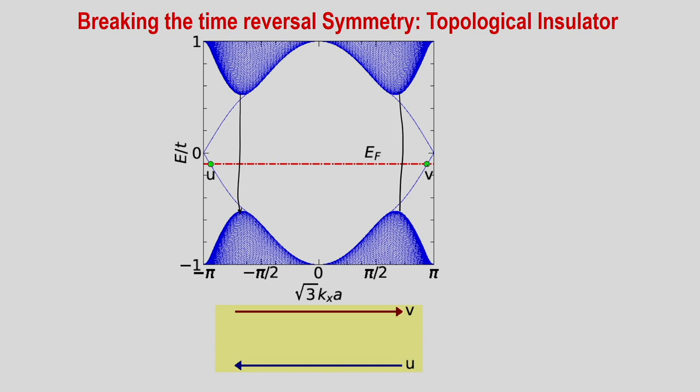The edge mode cuts at two green points. At those points the velocities are in opposite directions: electrons at the u-point travel from right to left (blue curve), and at the v-point from left to right — they are moving in opposite directions, just like a highway. When we discussed the quantum Hall insulator, this really acts like a quantum Hall insulator with edge modes. The difference was that there was no translational invariance, making calculations difficult.